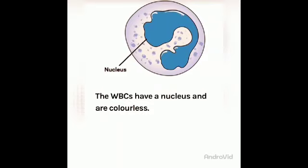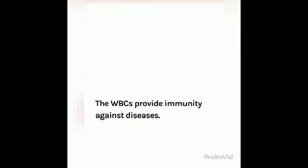As you have seen, RBCs are basically red in color due to the presence of hemoglobin pigment, but white blood cells are devoid of color — that means they are colorless — but they bear a nucleus. Here you can see a nucleus present in dark blue color in the center. The WBCs provide immunity against diseases.